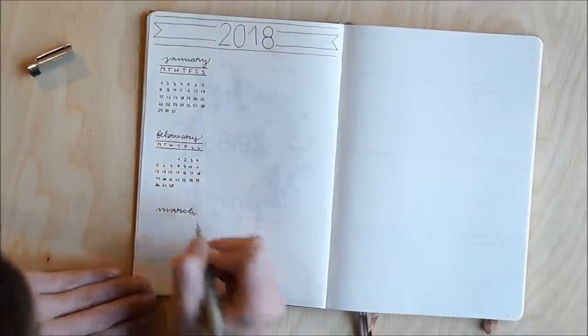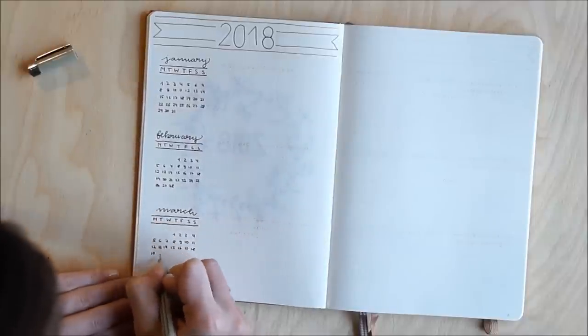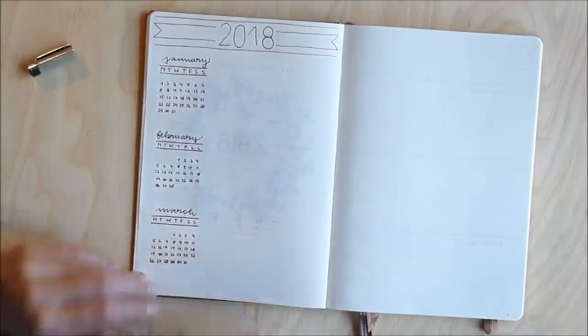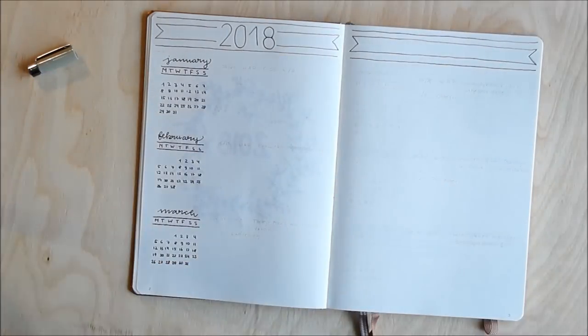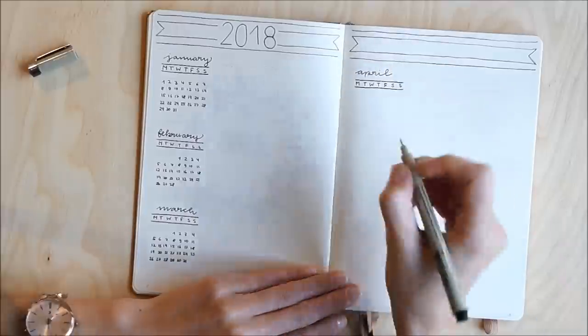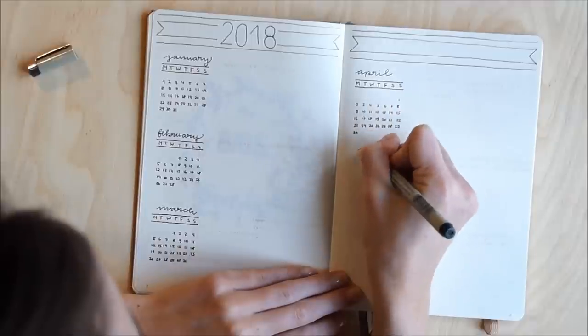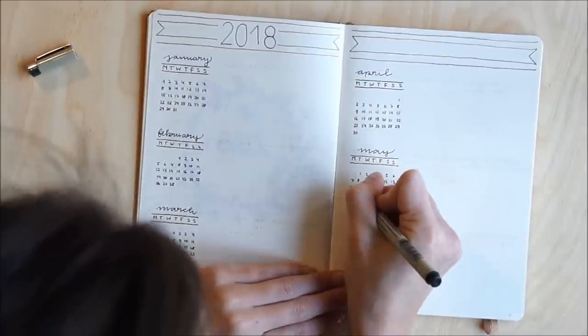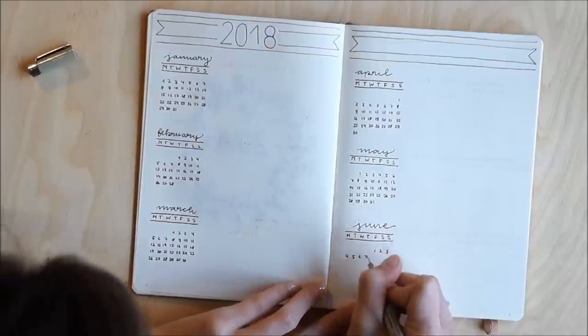So the first functional pages that I made are a yearly log for 2018. I needed some space where I could pre-plan, where I could write down all the appointments that I had for the month prior to setting up the month. So I chose to have three months on each page and that way I ended up with four pages for the yearly log,